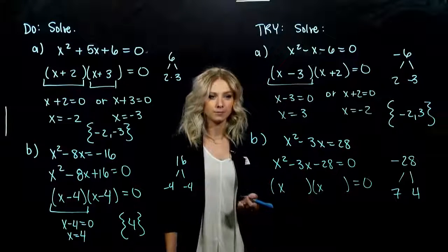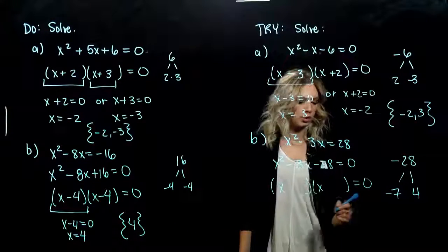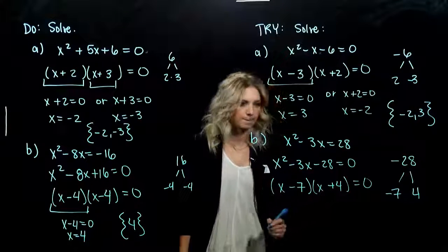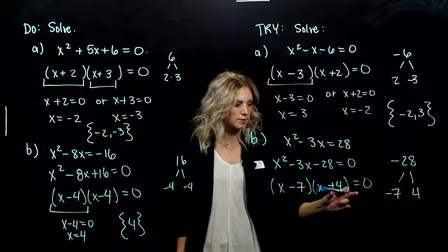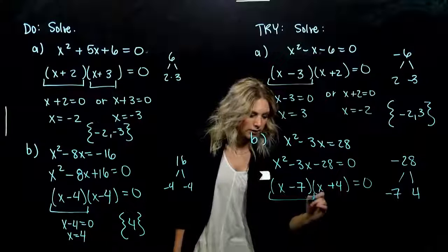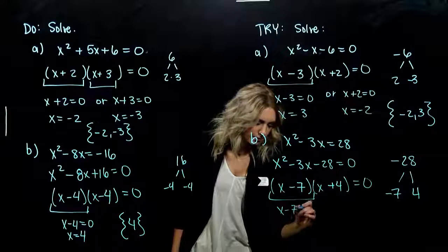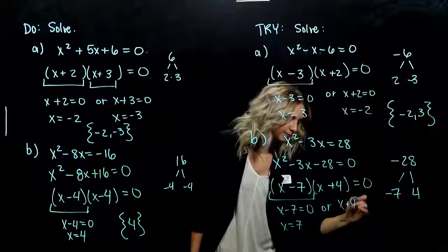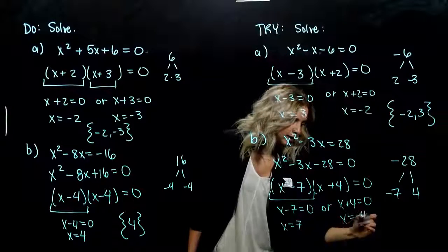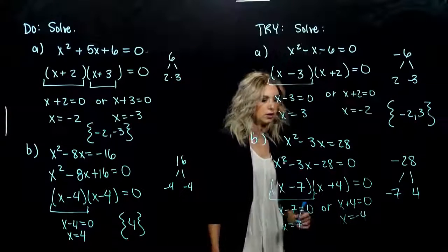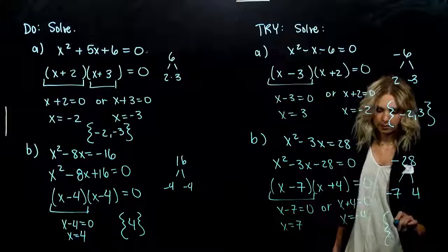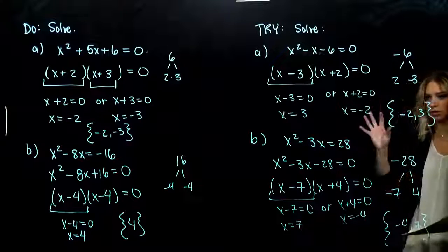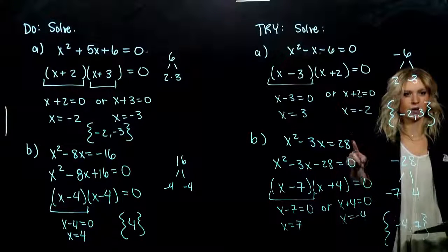Which sign needs to be negative? The larger one, so that when we add it we get a negative number. Order doesn't matter. Now we have a product — two things being multiplied equal to 0. Either the first chunk equals 0, giving us x equals 7, or the second chunk equals 0, giving us x equals negative 4. So our solution set contains negative 4 and 7. We can plug into the original to check.